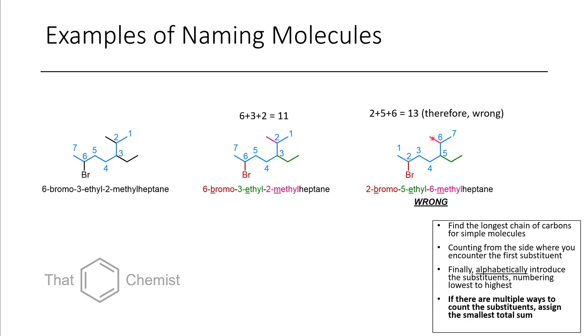So if you ever are unsure about what the correct chain to make the primary chain is, you can try numbering it a couple different ways and then add up the sum of the substituents to get an indicator.